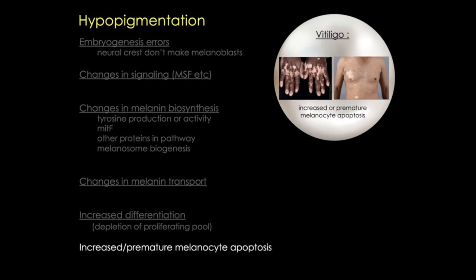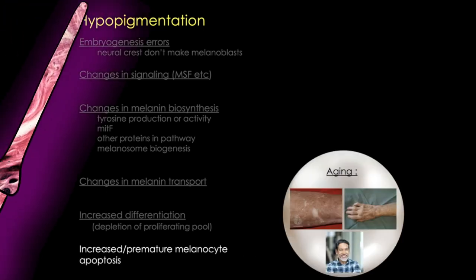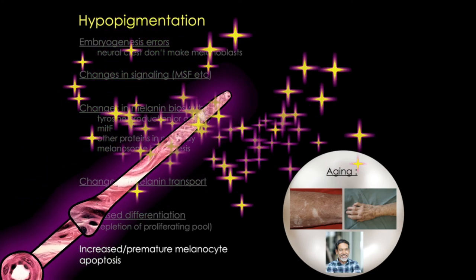Vitiligo occurs in all races, and there's good evidence that it's associated with a dysregulated immune response, though it's not completely understood. We also see loss of melanocytes in aging skin and hair.